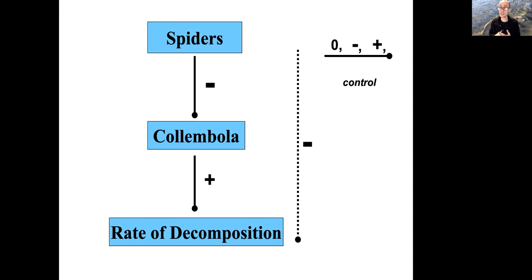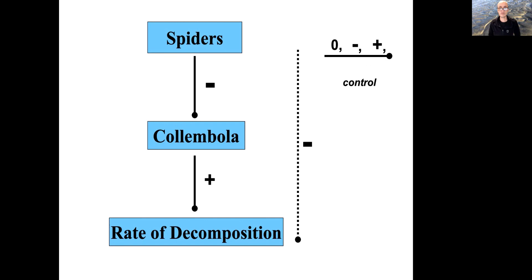This concept of the trophic cascade was actually first investigated in aquatic systems — looking at the effect of fish on zooplankton, and zooplankton on phytoplankton, and what that does to the clarity of lakes. It's a very broad concept. People have looked at it in above-ground systems, and now we've started looking at it in below-ground systems as well. The real question is: is this true? We know that collembola affect the rate of decomposition — but do spiders actually have this negative indirect effect on decomposition through their action on collembola?